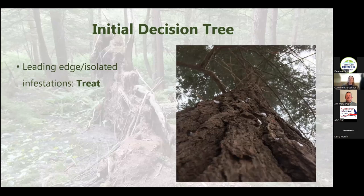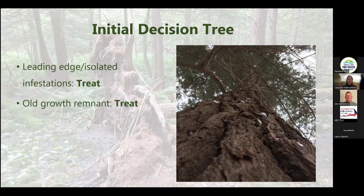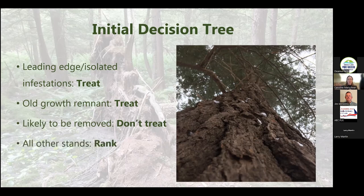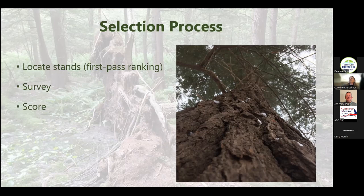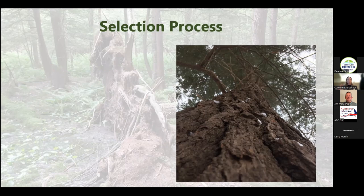The first part is a decision tree: if you're at the leading edge of an infestation — which you're not in Seneca Lake — go ahead and treat. If you have an old-growth remnant or a really nice forest with big old trees and not too many invasives, go ahead and treat that — it's important. If you're likely to take these trees out for some reason, don't treat. Otherwise you can think about all the different metrics. If you're looking at many different properties you might want to consider the Seneca Lake and Keuka Lake watersheds as a whole and come up with a regional hemlock conservation plan.